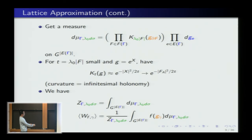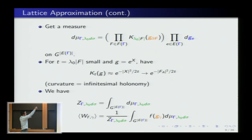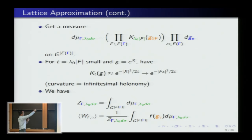The lattice partition function is the integral of this measure over all fields. The expectation of a Wilson loop is: feed in the class function F, where g(γ) is computed by adapting the loop γ to the lattice and multiplying all group variables in the order defined by that curve. It's the holonomy along the lattice. You feed that into your function and take its expectation. This is the discretized version of Yang-Mills theory.